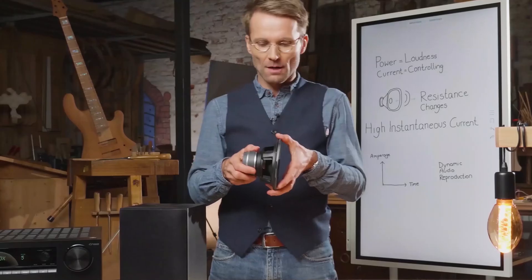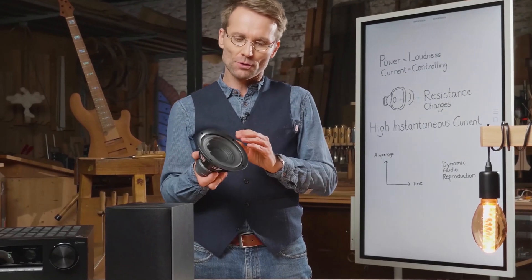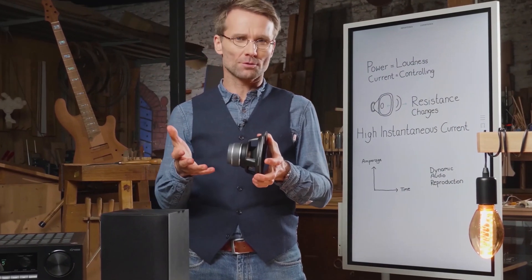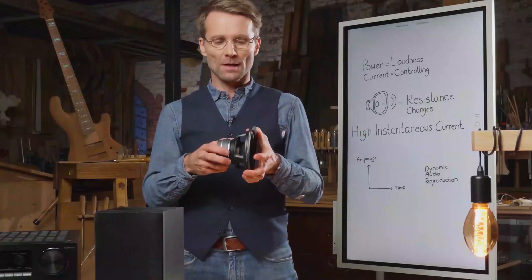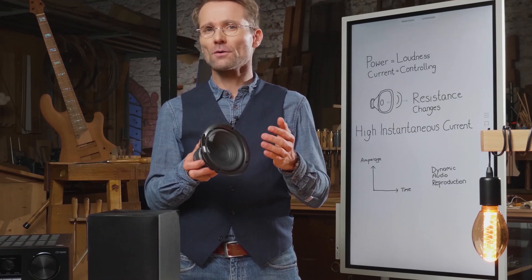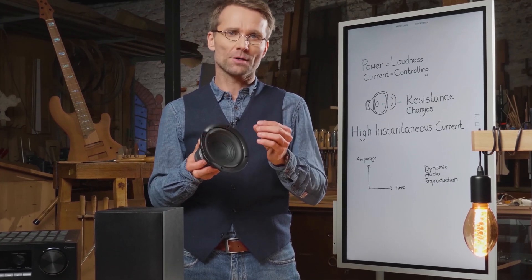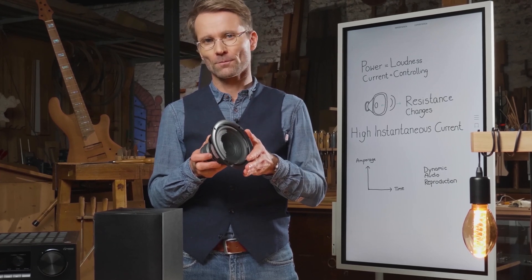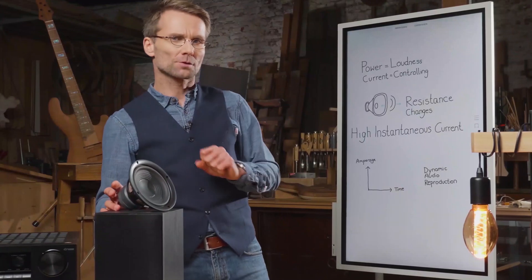Let me show you at the speaker. We've taken the speaker out of a speaker system just to show you. This diaphragm has to be moved, and for control over this diaphragm you need current. Now this speaker has a certain resistance to it — you can have speakers with 4 ohms, 6 ohms, or 8 ohms. And somewhere within a musical piece, this resistance can go down almost to zero.